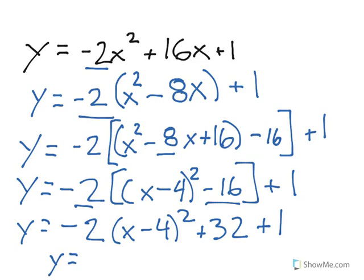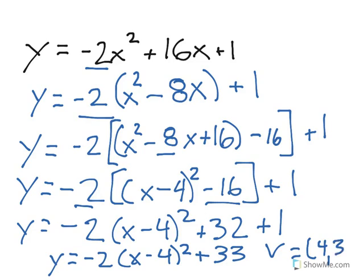So my final step is y equals negative 2, x minus 4, squared, and then I just combine these constants at the end. 32 plus 1 is 33. So my vertex is 4, 33. Hopefully that helps see how we can complete the square with the leading coefficient.